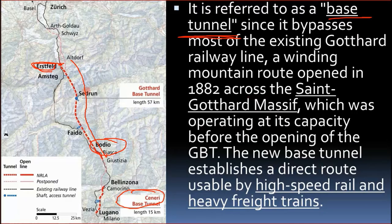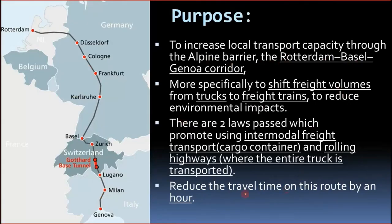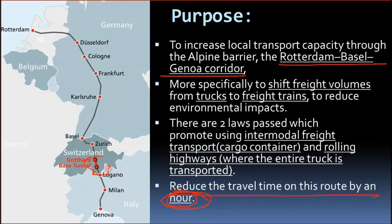The tunnel was basically built to reduce travel time. When it is built, it reduces journey time by about an hour. That doesn't seem much for one person, but if a thousand people save one hour each day, they can do a lot of productive work, and that contributes to the economy. It is part of the Rotterdam–Basel–Genoa corridor, built to reduce pollution and road traffic.